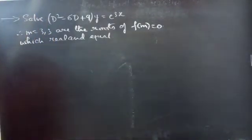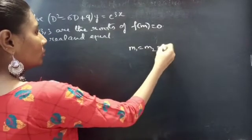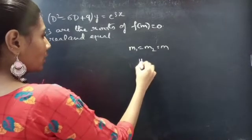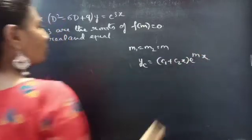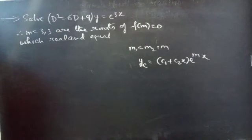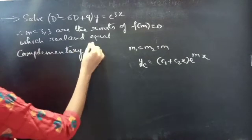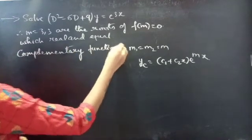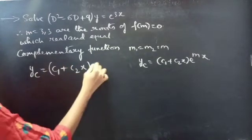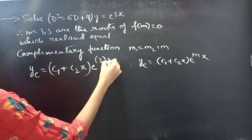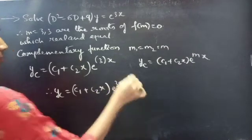We know that when two roots are equal, say m₁ = m₂ = m, then the complementary function is yc = (c₁ + c₂x)·e^(mx). Therefore, the complementary function for this problem is yc = (c₁ + c₂x)·e^(3x).